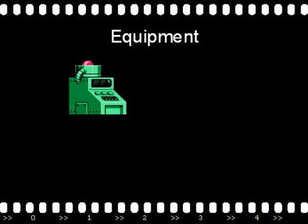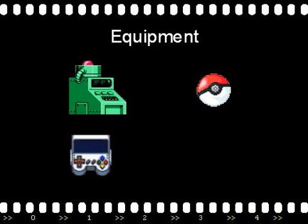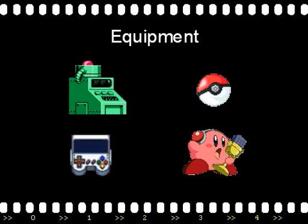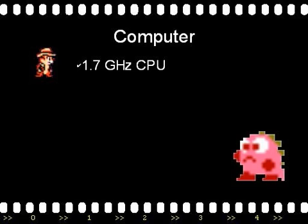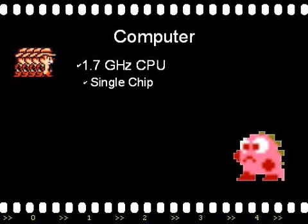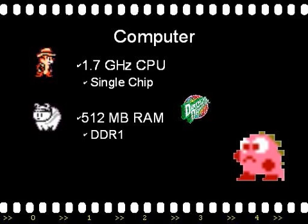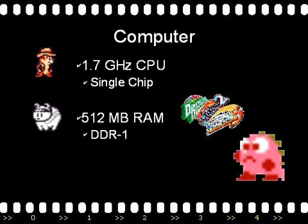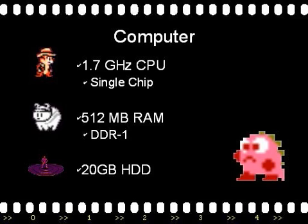What you need to capture video are your computer, your capture card, your device that you're going to capture, and a microphone if you're going to do commentary. You probably already have a computer, and here are the requirements: you need a 1.7 gigahertz CPU — this is a single chip, so if you have a dual or quad core, you're fine. You need 512 megabytes RAM and DDR1, though more than likely you have DDR2. You need 20 gigabytes of hard disk drive space, which is not for the files but for editing, dubbing, and working with whatever you're capturing.